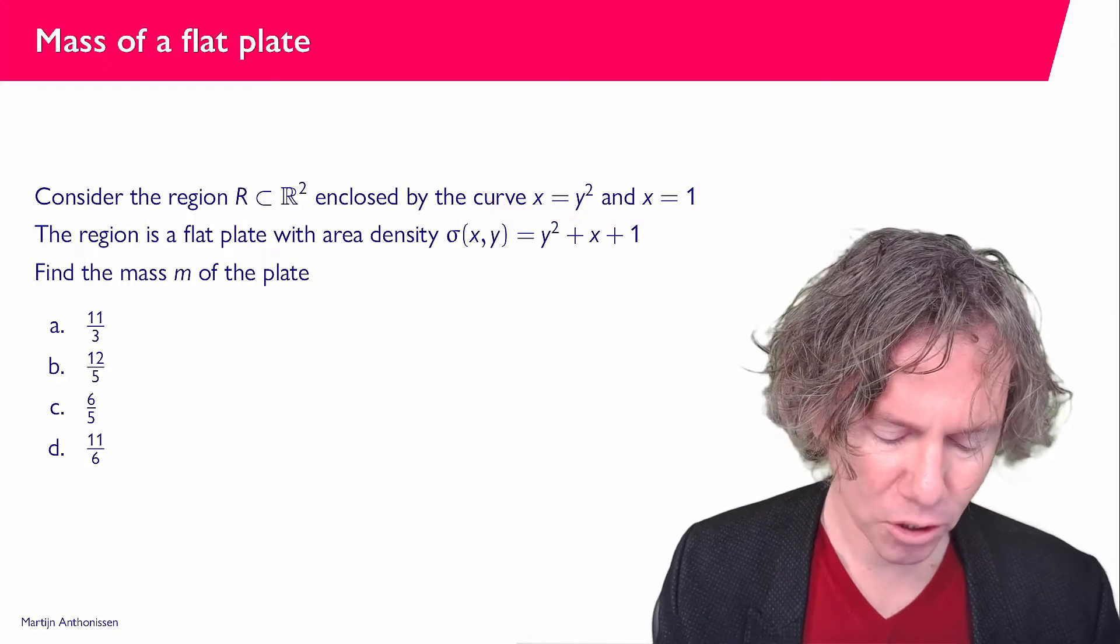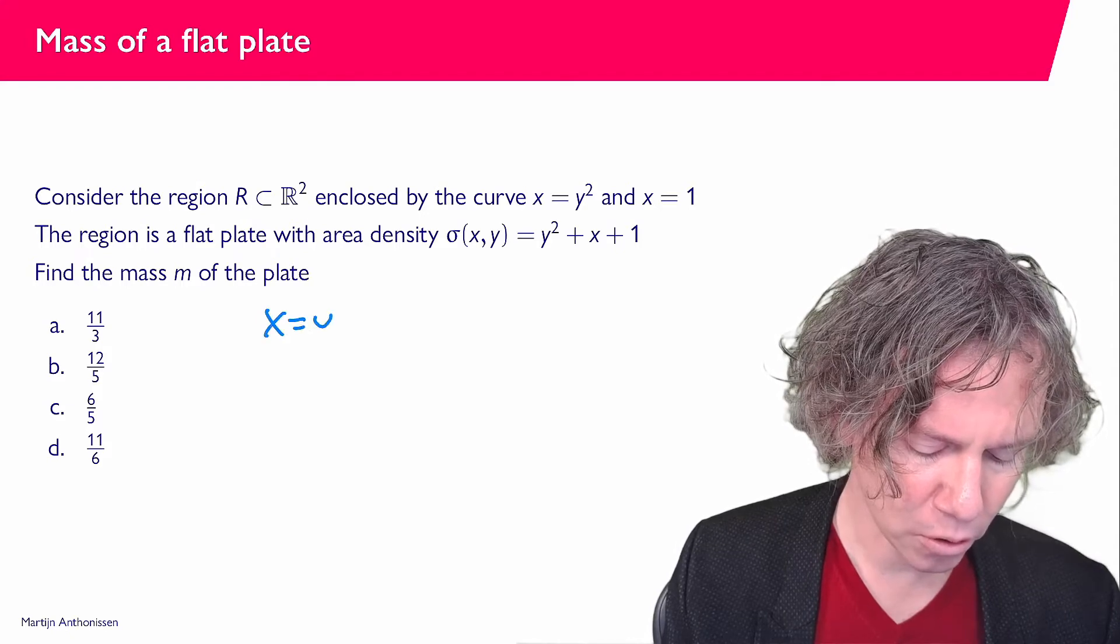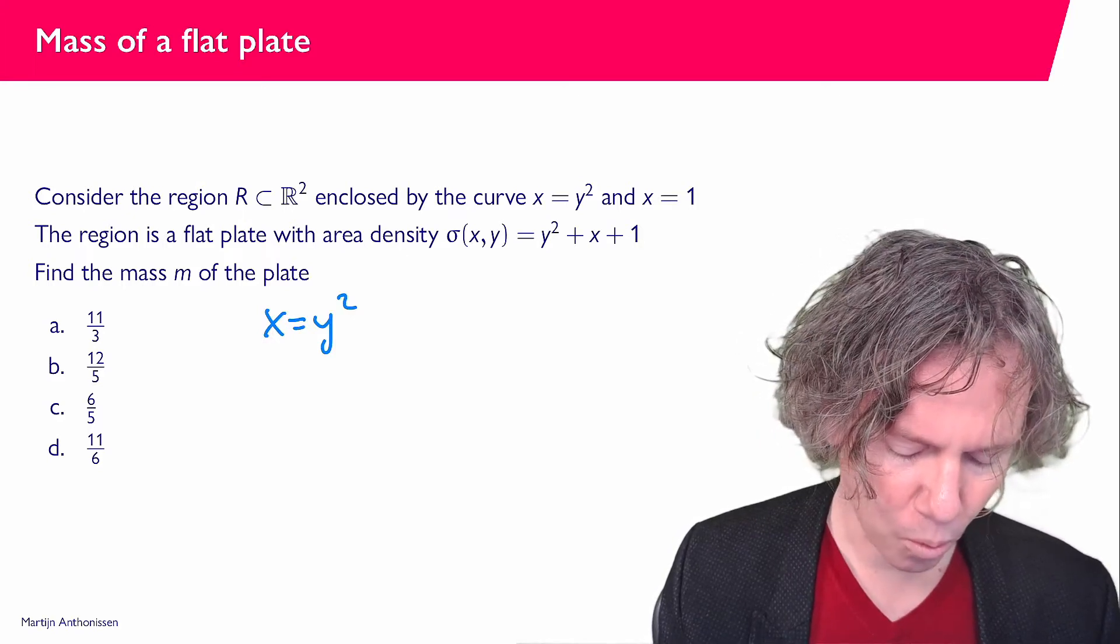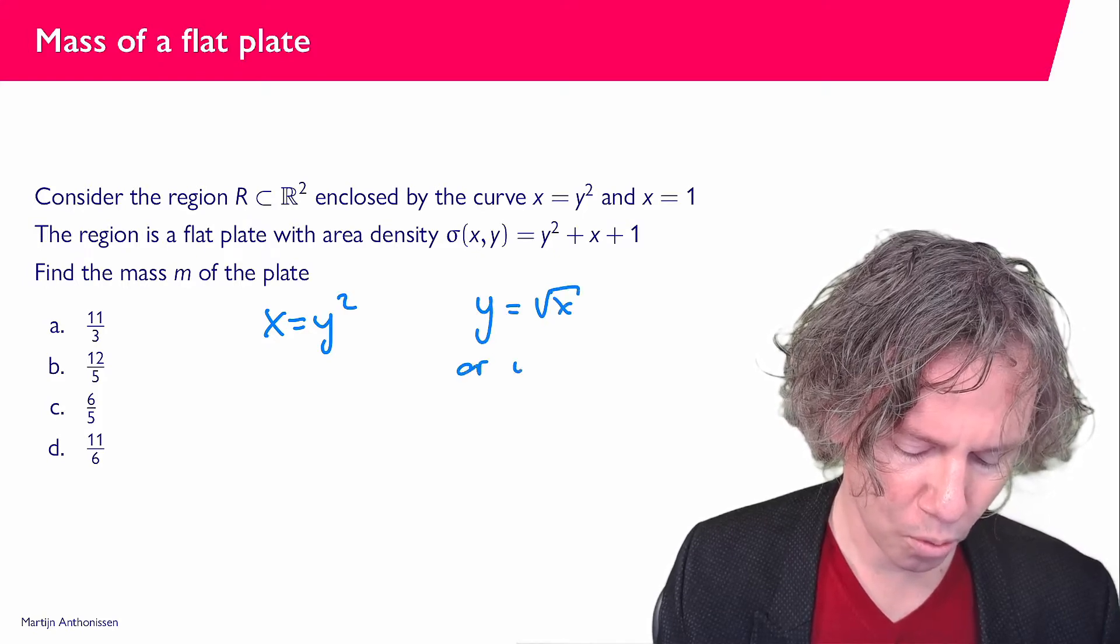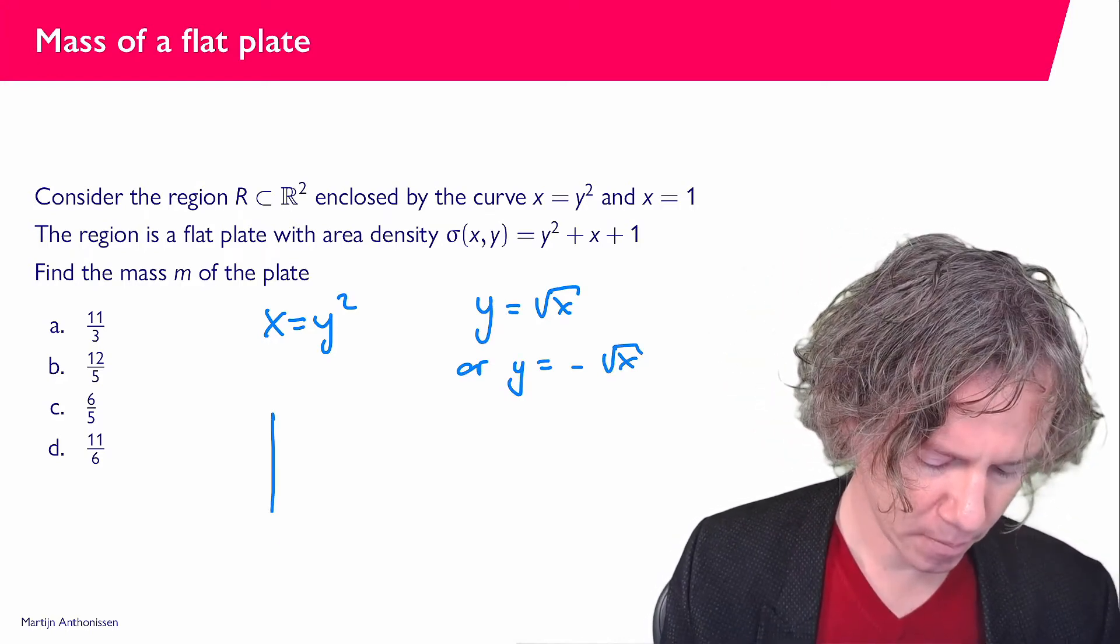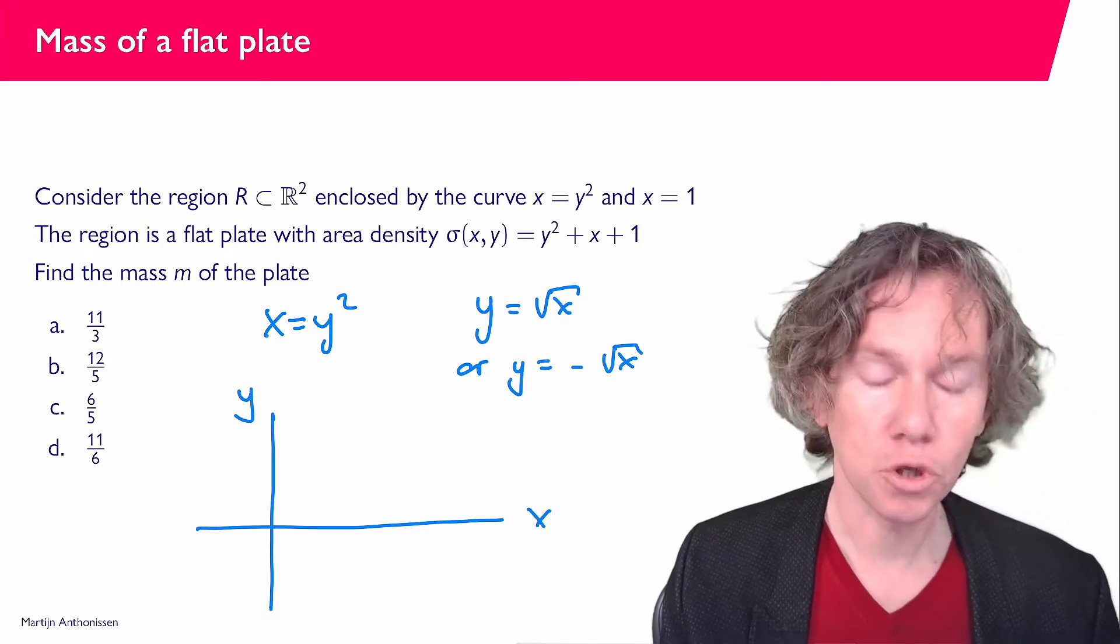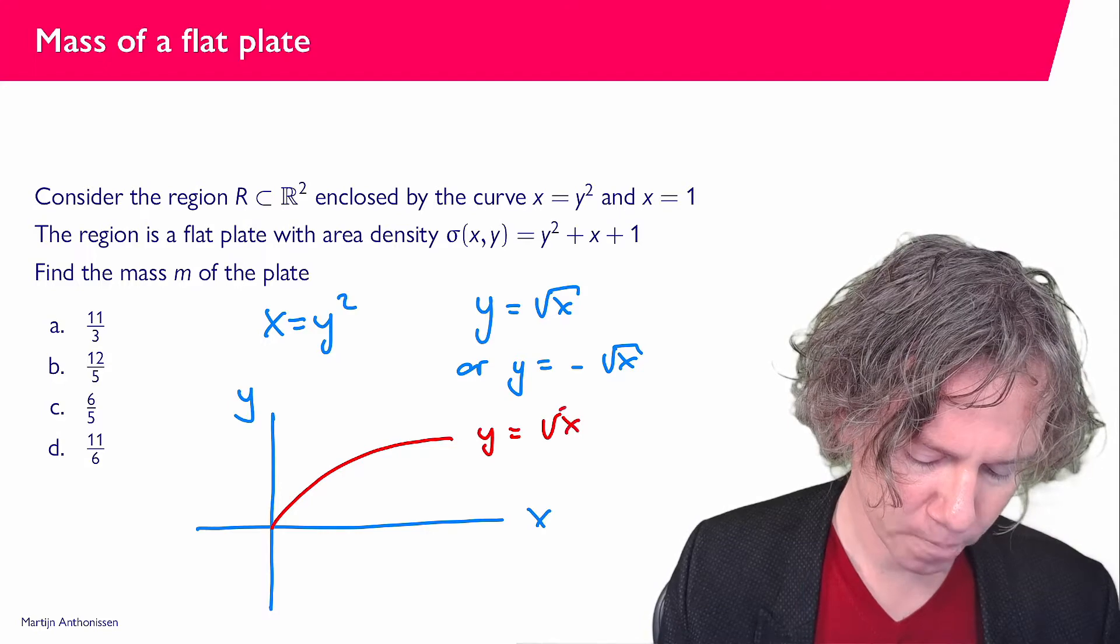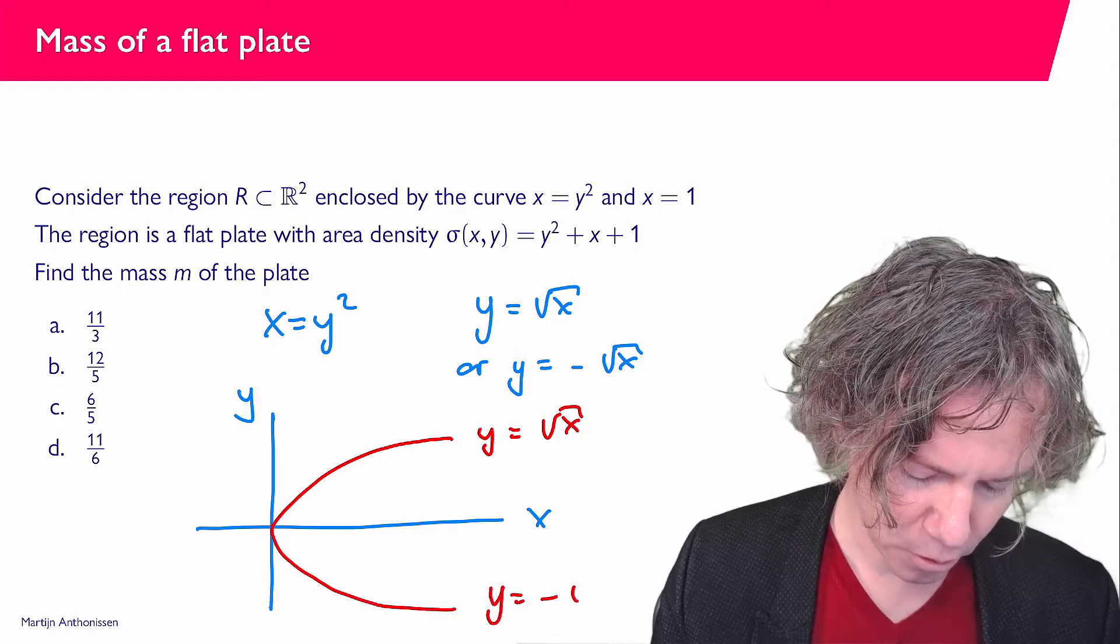So let's first make a sketch of what this looks like. We have x equals y squared, which means that y equals square root of x or y equals minus square root of x. And if you plot that, x axis, y axis, then the square root function looks like this. y equals square root of x. And then below here we have y equals minus square root of x.